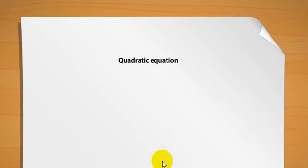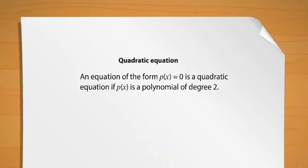But first, what is a quadratic equation? If we have an equation of the form p(x) = 0 and p(x) is a polynomial of degree 2, we have a quadratic equation.